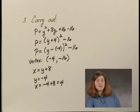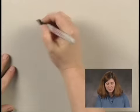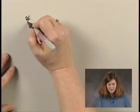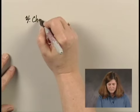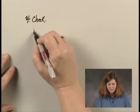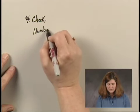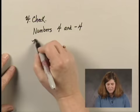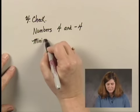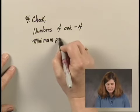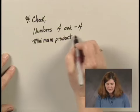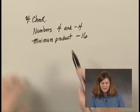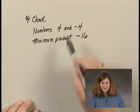So when I go to check, I am checking the possible answers. I have the numbers 4 and negative 4, and the minimum product, negative 16. Now, these numbers have a difference of 8, and that's correct.